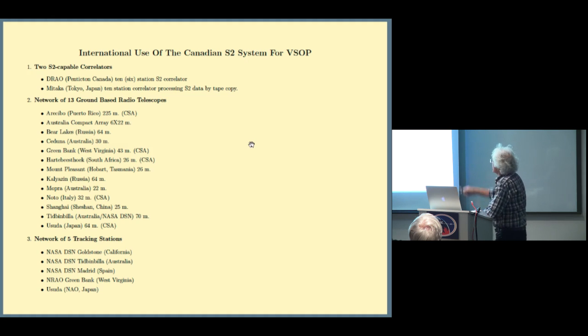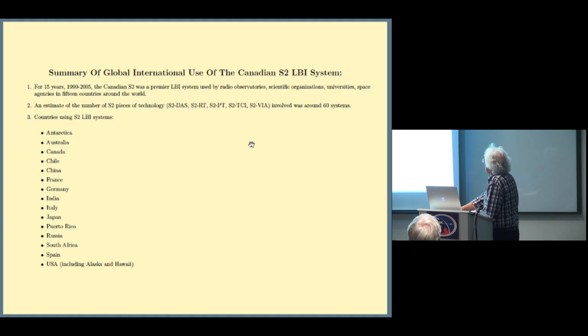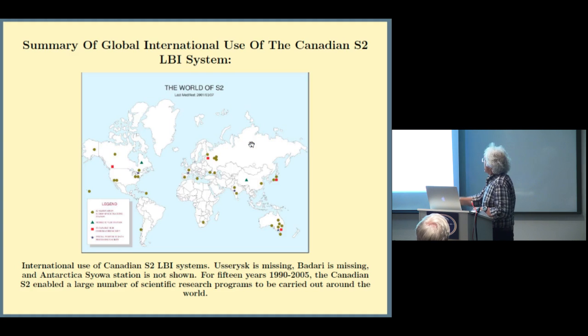These were the S2s that were used in the VSOP. Not all of them were CSA. There's a CSA one. The rest were all provided by the observatories themselves, because the S2 had become very popular. The geodetic VLBI system also got off the ground. The Russians joined it. The Americans joined it. The German-Chilean collaboration joined it. There was this interesting arrangement between Yellowknife and Gilmore Creek in Alaska where you could swap the station back and forth. There were actually 15 countries that used the S2 system. I once tried to estimate how many systems were actually out there - something like 60. This is a map of the world of where they ended up.